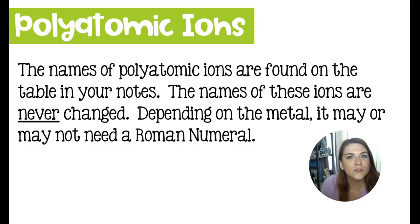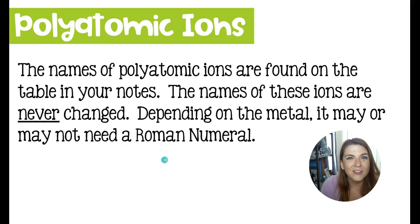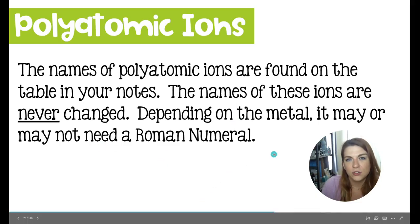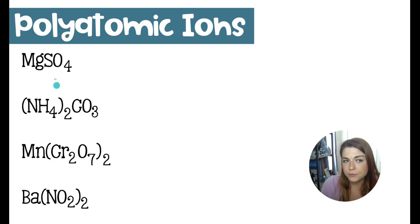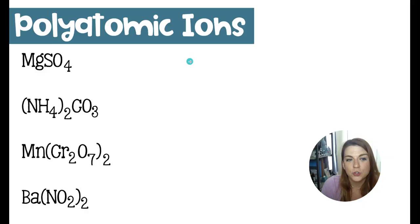The last set of rules involves compounds with polyatomic ions. Anytime there's a polyatomic ion in an ionic compound, you don't change its name — you leave it as is. Depending on the metal, you might need a Roman numeral — specifically if it's a transition metal from the D-block. For example, magnesium bonded to sulfate: magnesium keeps its name as the cation, and sulfate stays as sulfate. So this is simply magnesium sulfate.